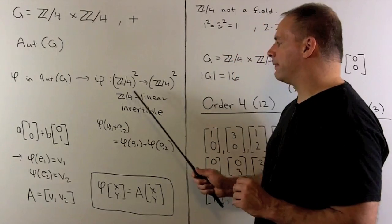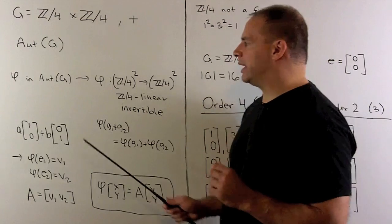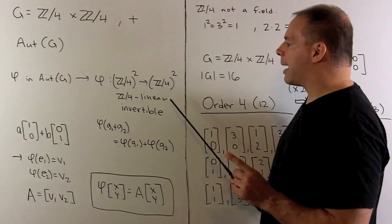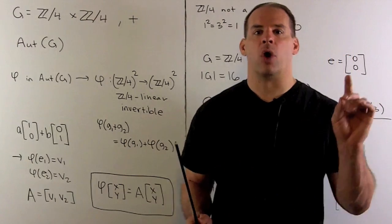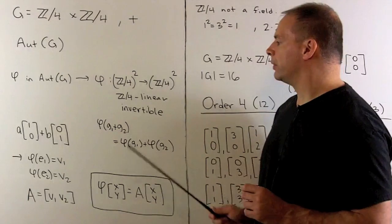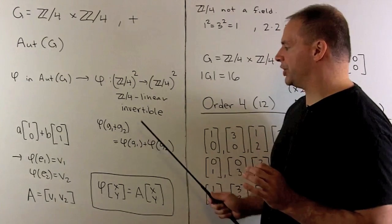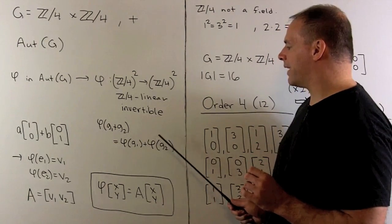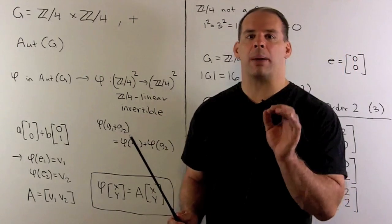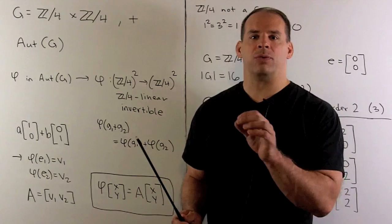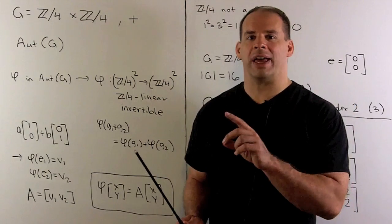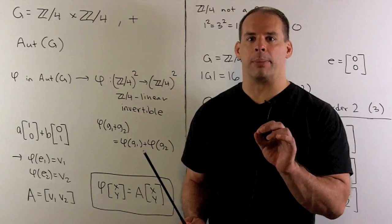These maps are going to be Z mod 4 linear. Because we need bijections, they'll also be invertible. Now, the linear property holds just by the homomorphism property for the automorphism. So, since we're using addition, we'll have phi of G1 plus G2 equal to phi G1 plus phi G2. That's going to take care of the additive property for linear. And if we define scalar multiplication on vectors in the natural manner, we'll also get the scalar multiplication property for linear.